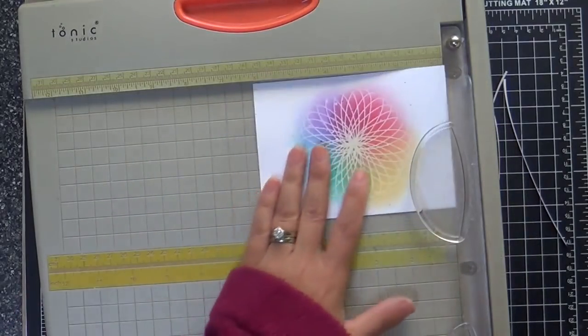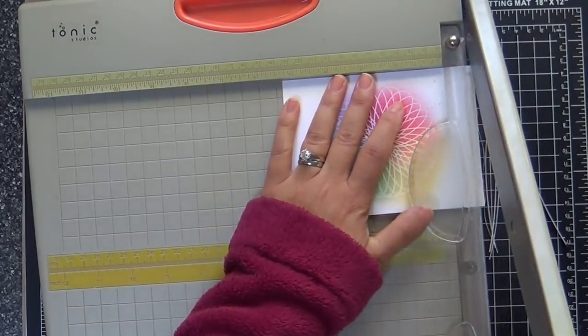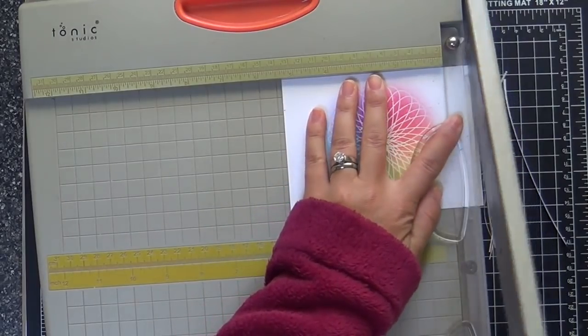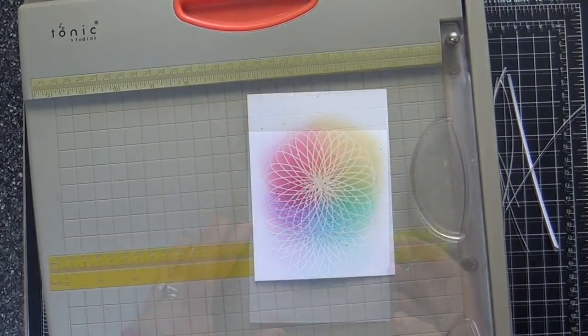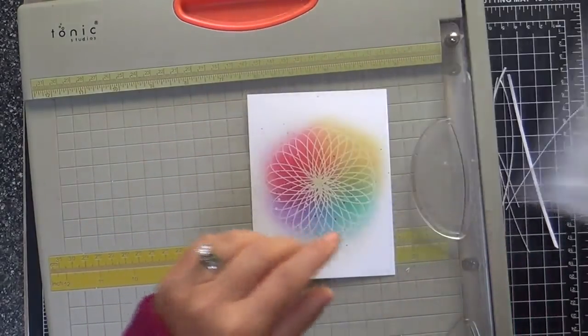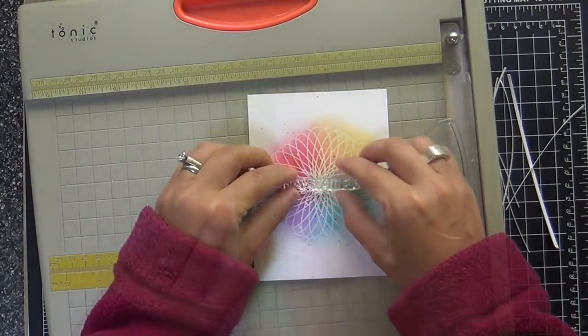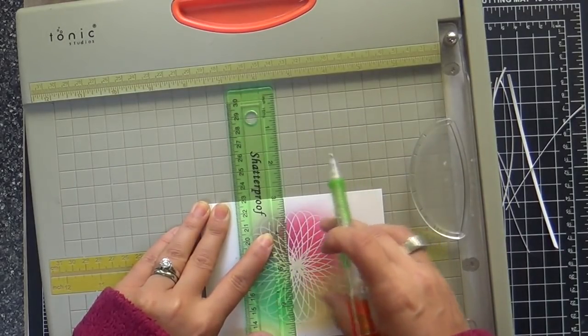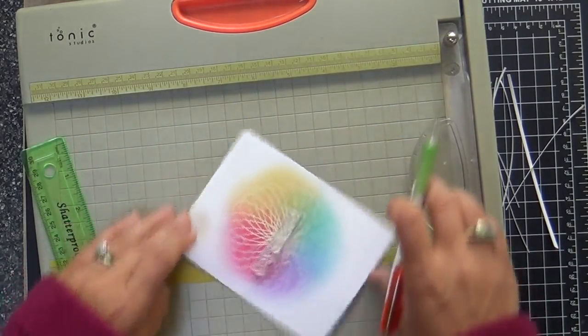I trim my panels a little bit smaller than my card base, then pop it up so you get that white frame around the sides. I like that. Then I'll take a sentiment—'Stay Beautiful.' I love these modern, clean lines on these fonts.